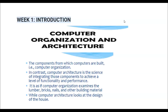Computer architecture is considered first when designing a computer, whereas computer organization is built after considering computer architecture. Computer architecture provides the functionalities of the computer system, whereas computer organization helps us understand how all the units in the system are interconnected. Computer architecture covers high-level design issues, while computer organization covers low-level design issues.